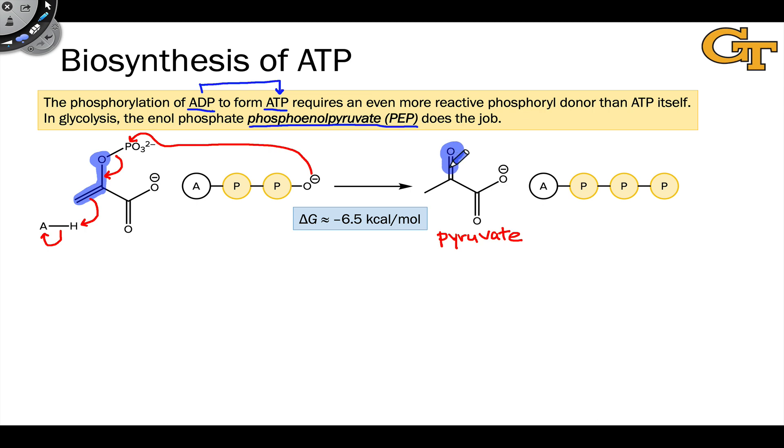In essence, the reason this happens—the reason it's thermodynamically heavily favored (you can see negative 6.5 kilocalories per mole here)—is that a big part of what we're doing here is simply keto-enol tautomerization.